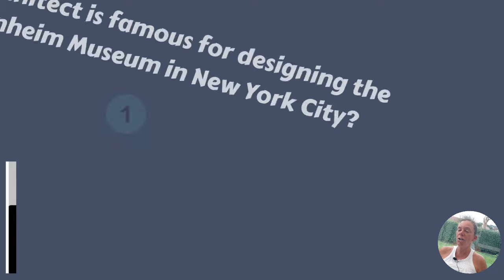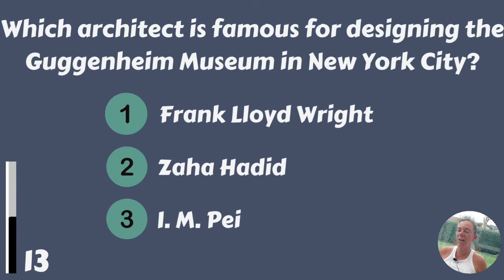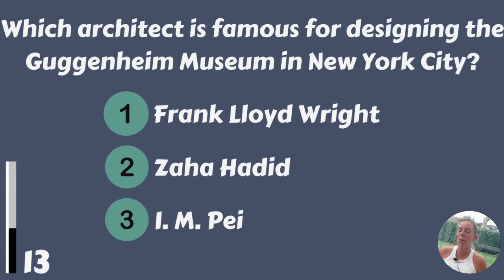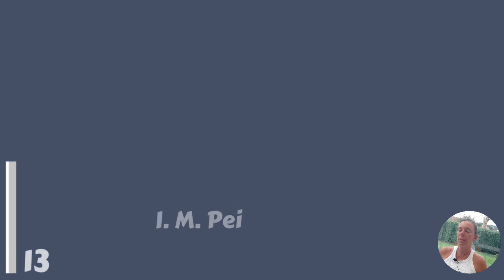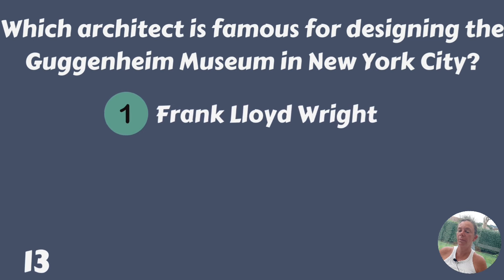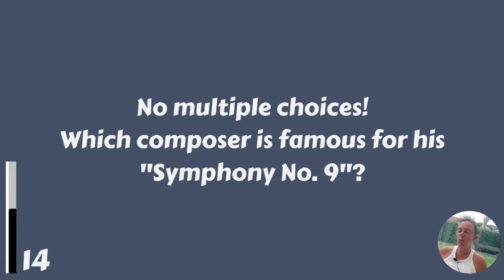Which architect is famous for designing the Guggenheim Museum in New York City? Frank Lloyd Wright, Zaha Hadid or I.M. Pei? No multiple choice — Frank Lloyd Wright.